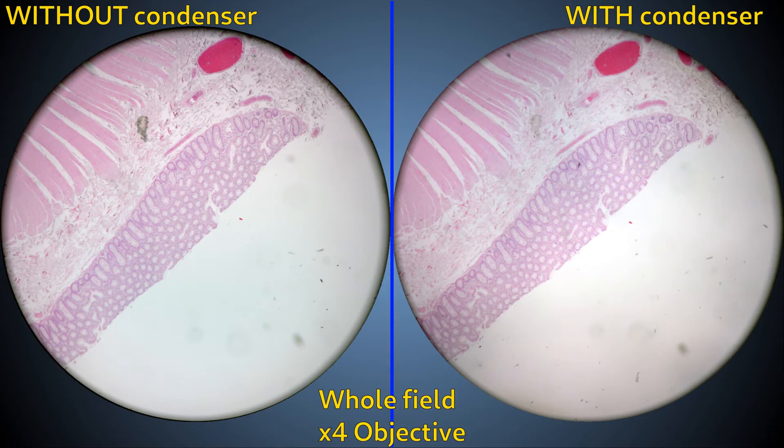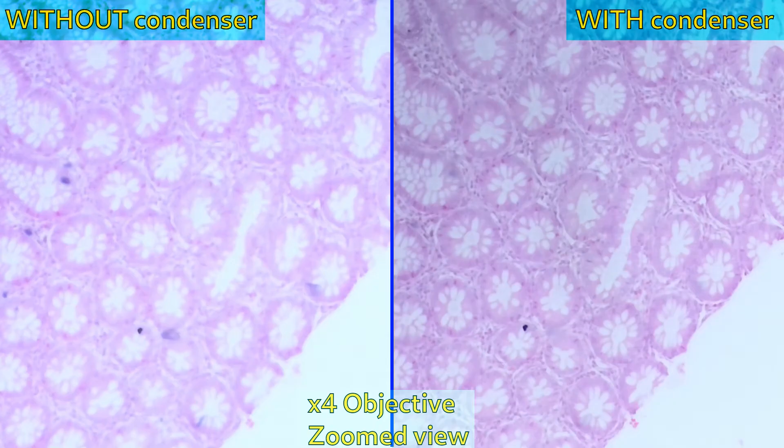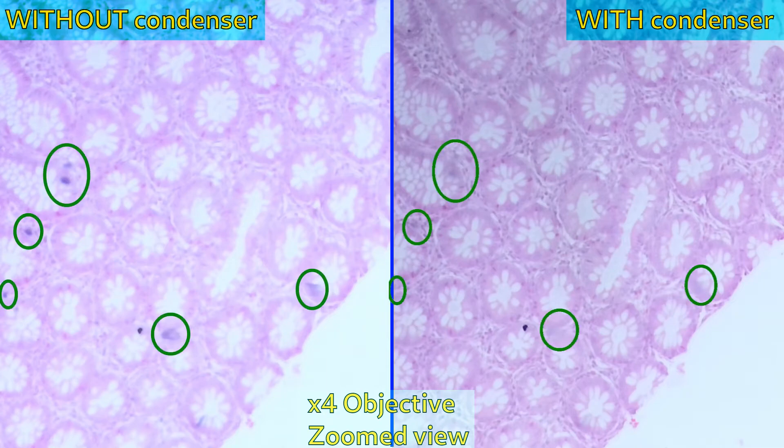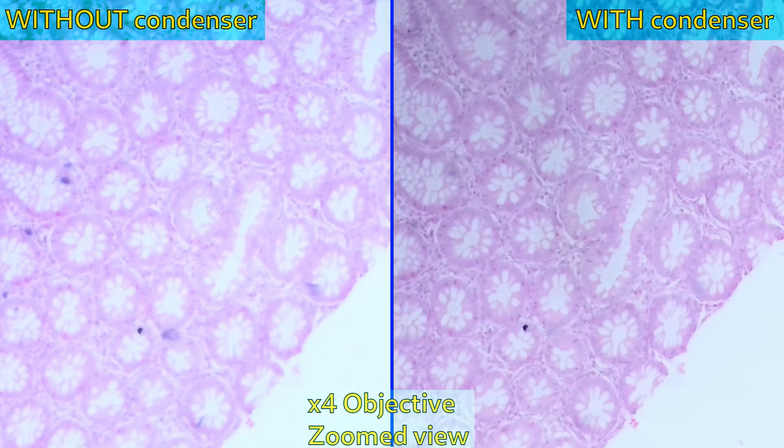For now, however, note that without a condenser, any small speck of dust or debris overlying the sample appears exaggerated, as shown here. Also, if we zoom into this part of the image, we can see that not only are overlying debris less visible with the condenser, but also the condenser provides crisper detail, distinguishing individual cells in the lamina propria, for example, even with this low magnification 4x objective lens, because the condenser makes fuller use of the lens's numerical aperture.